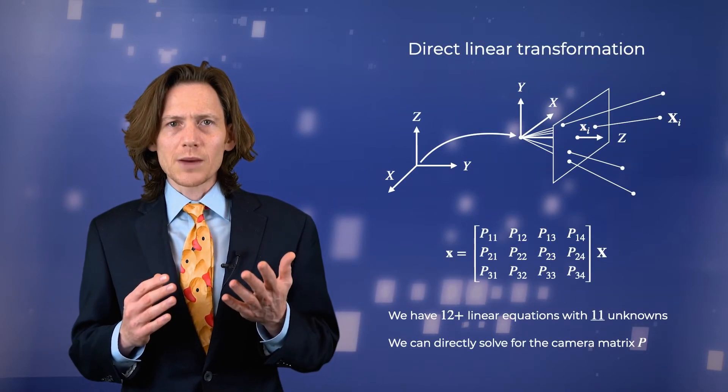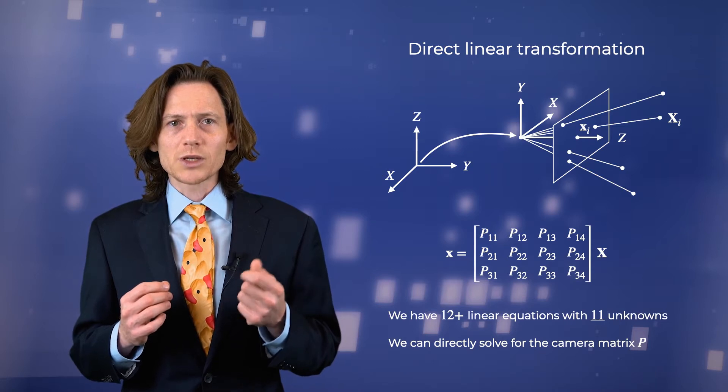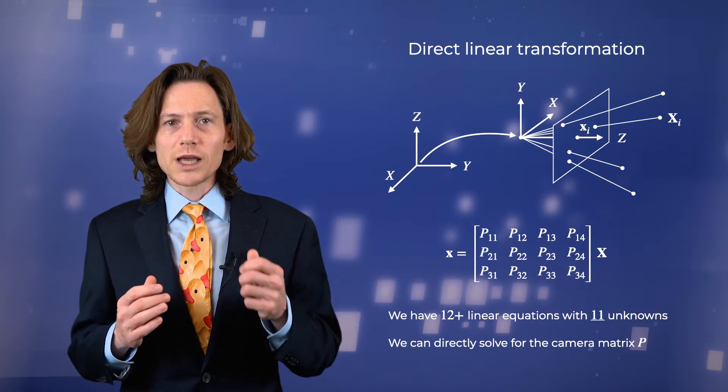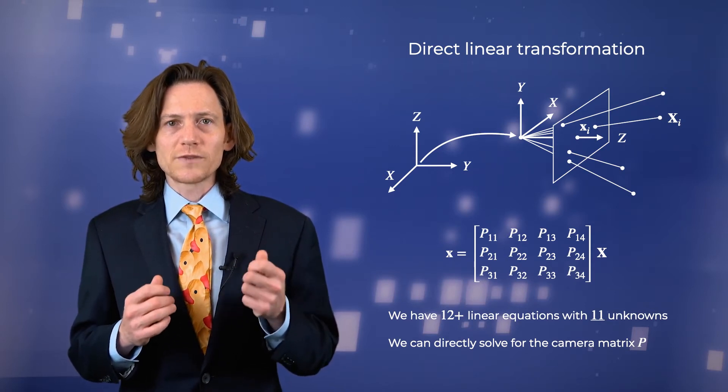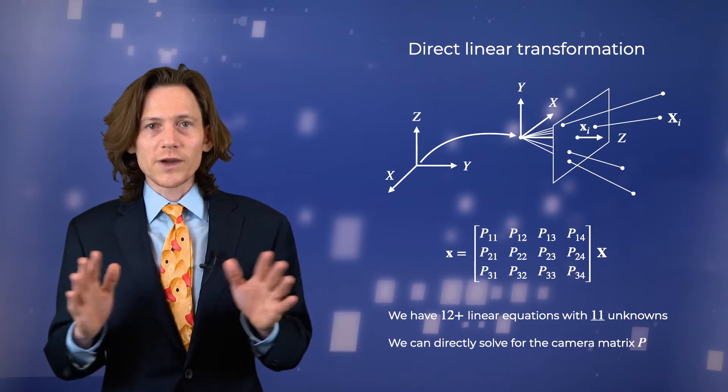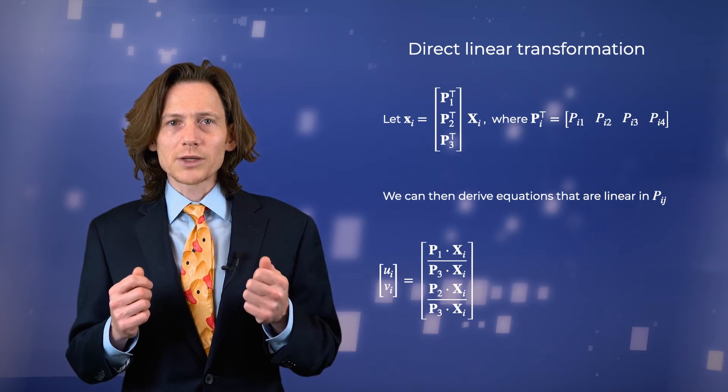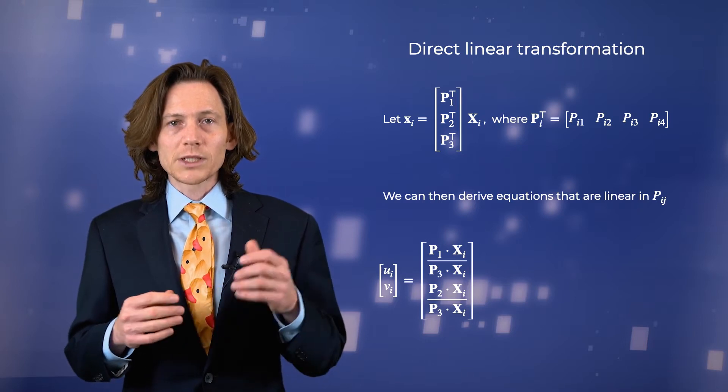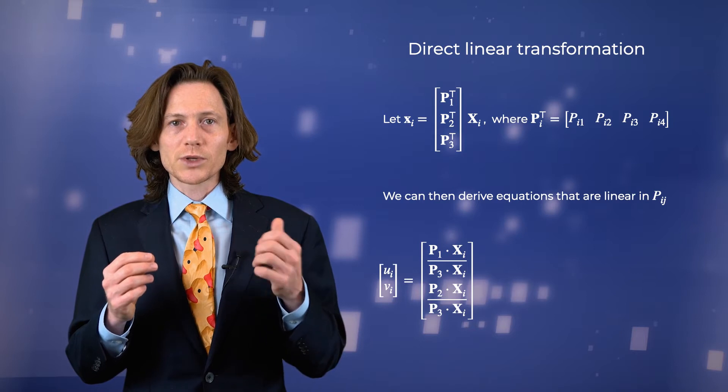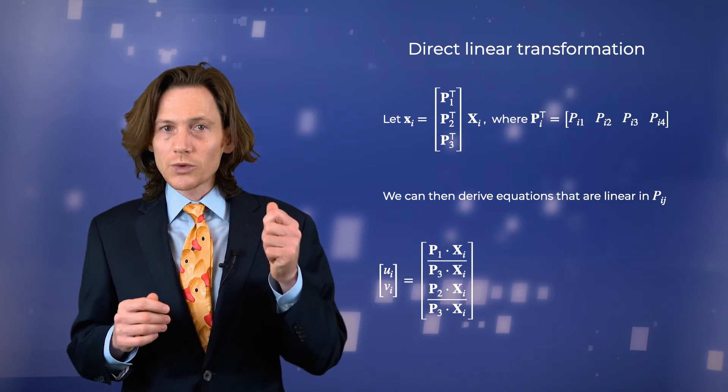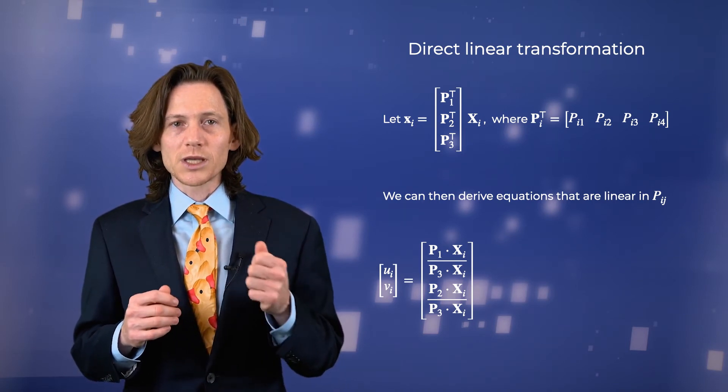One option for calibrating the camera is to directly estimate the entries of the three by four camera matrix P that maps 3D scene points to their 2D image coordinates. While the matrix has 12 entries, there are only 11 degrees of freedom, since perspective projection is only defined up to scale. To see how we might do this, let's write the camera matrix as a concatenation of three four-dimensional vectors, one for each row of P. For a particular point pair, we can express the Cartesian coordinates of the projected point in terms of the inner product of these vectors and the homogeneous coordinates of the world point.